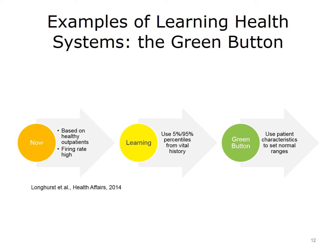In a similar example, outpatients with high blood pressure might normally be treated with the same set of initial drugs to lower blood pressure. Learning systems might adapt this based on population rates of successful treatment. But the green button might allow an individual patient to be matched to others with similar characteristics to see what worked for them.